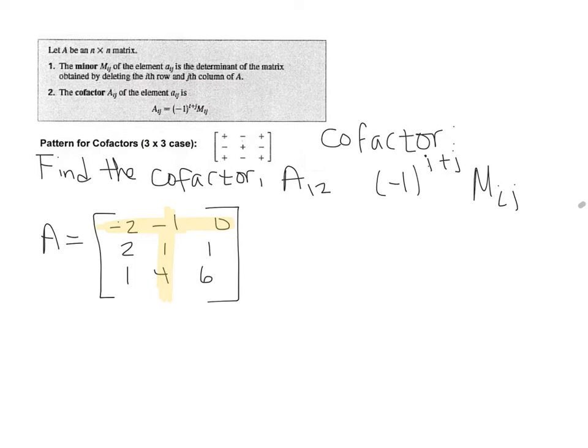The only added thing here that we do to find the cofactor is we will take negative 1 to the power of i plus j. And in this case, i and j are 1 and 2. So let's go ahead and look at that for a second.